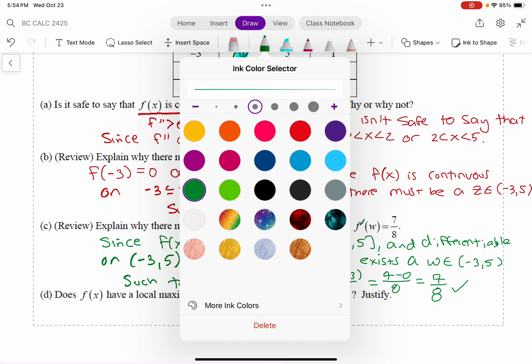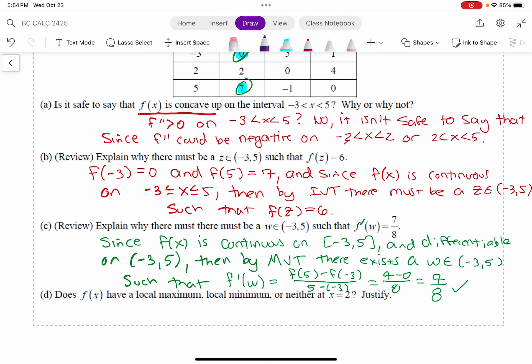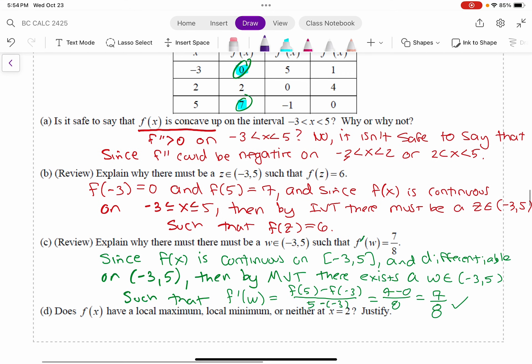And then lastly, this brings us to what we're covering now. Does f have a local max, a local min, or neither at x equals 2? So if you're asked local max, min, or neither when you're given a table of values, almost certainly this is a second derivative test question.